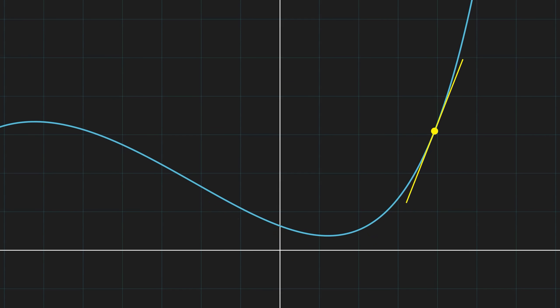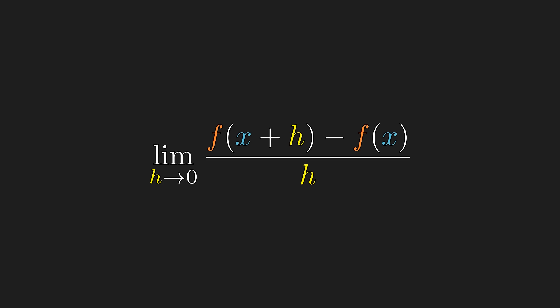You probably know what a derivative is. It's the tangent slope or the instantaneous rate of change. And you probably also know the definition of the derivative, which is defined using the limit of the secant slope. But why is it defined that way?